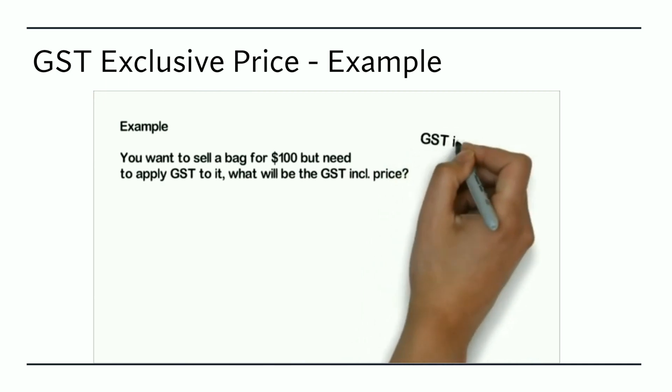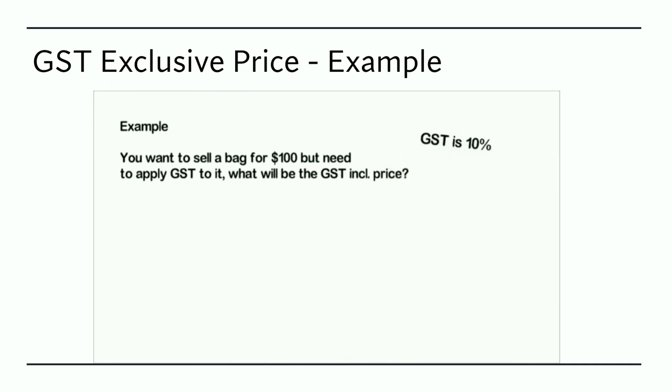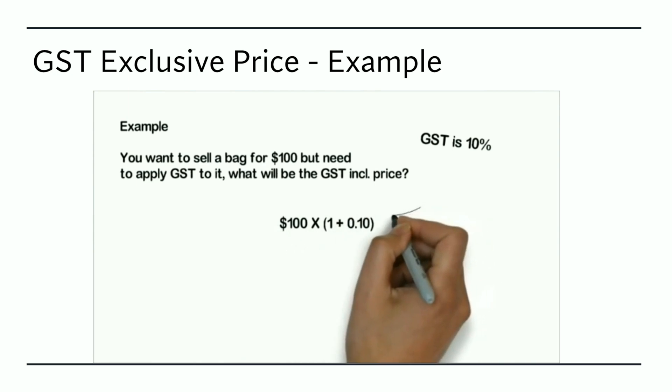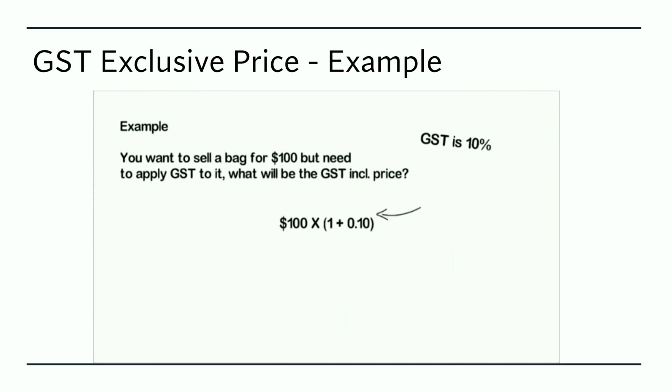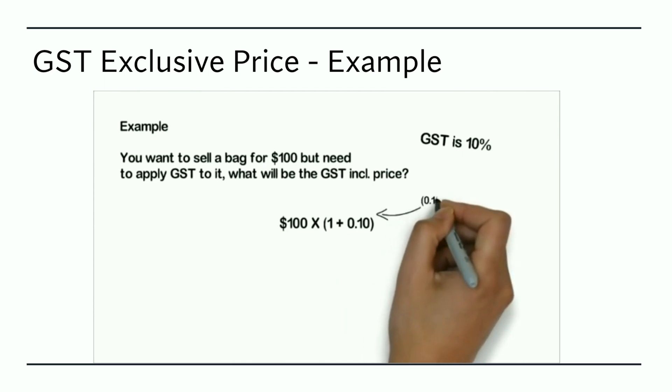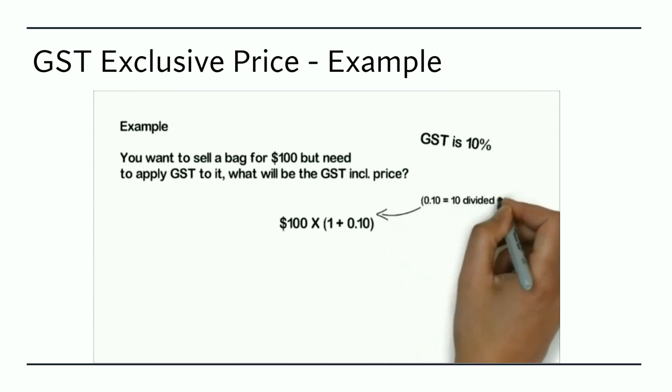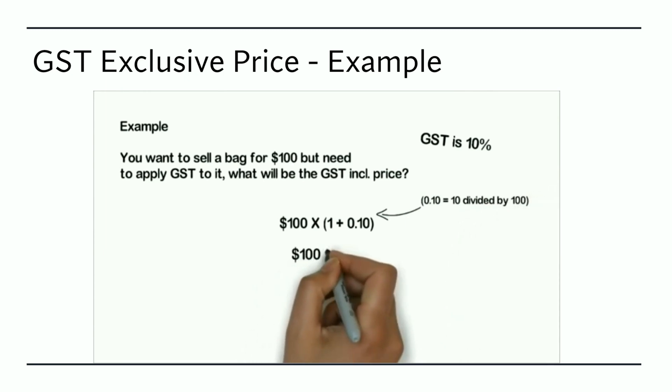So you take the GST exclusive price of $100 and multiply by 1 plus 0.10. The 0.10 comes from the fact that the GST amount is 10%, so 10 divided by 100, to change it to a decimal, is 0.10. Therefore, you have $100 times 1.1, which equals $110 including GST, meaning the GST amount is $10.